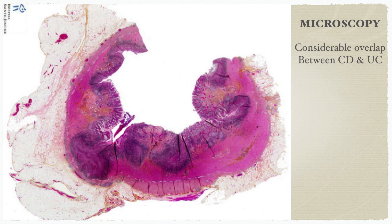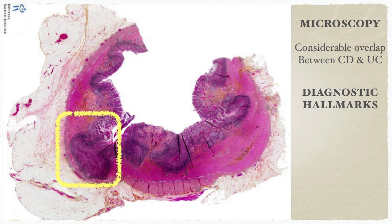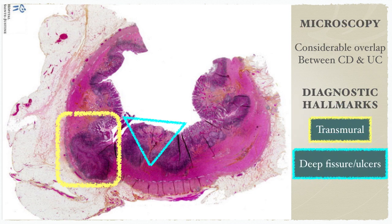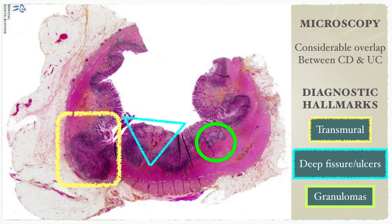We move on to the microscopic pathological features. This panoramic view shows one segment of bowel composed of mucosa, submucosa, muscular layer, and serosa layer. As you can see, there is transmural involvement of inflammation. Looking at the superficial mucosa, there is an area without epithelium, indicating ulceration — and it extends deep downward. The last feature appreciated here is multiple granuloma formation. With these diagnostic hallmark features, we can call this Crohn's disease.